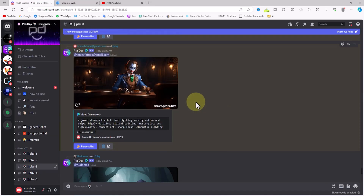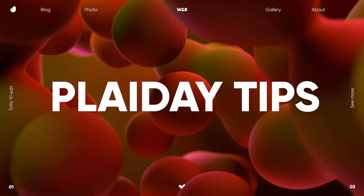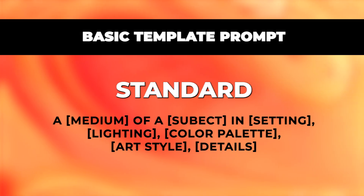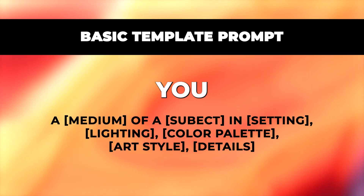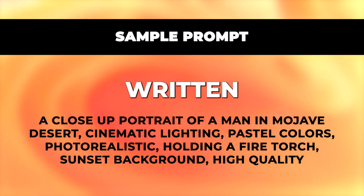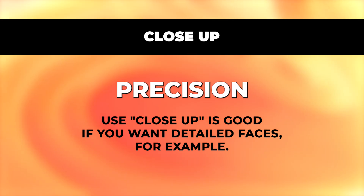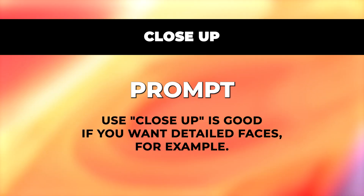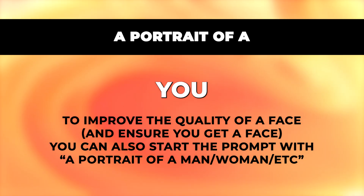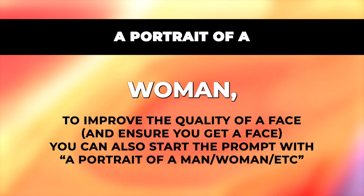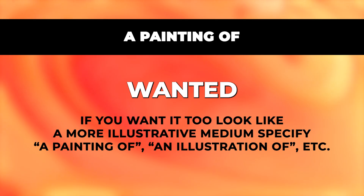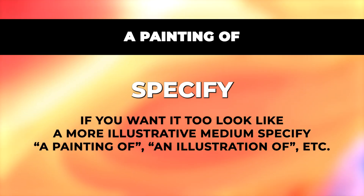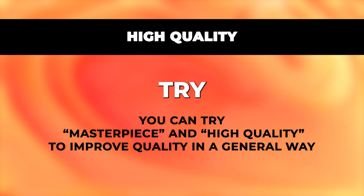Now let's review important points for writing prompts in Playday AI. The standard structure for text-to-video prompts is shown in the video. If you want a face full of detail, add 'close up' to the prompt. To get a specific type of face, start with 'a portrait of a man,' 'woman,' 'superhero,' 'chef,' etc. Use 'photorealistic' for a realistic look, or 'a painting of' or 'an illustration of' for an illustrative style. You can also try 'masterpiece' and 'high quality' to improve quality generally.